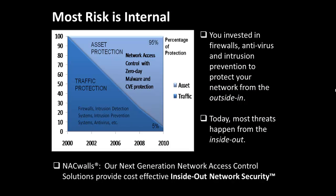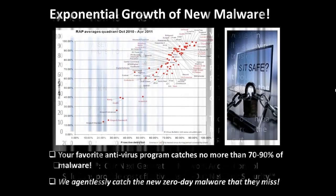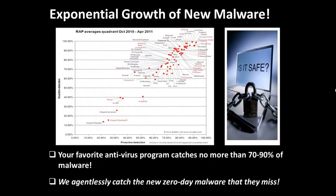Most risk is internal. While you've invested in firewalls, antivirus, and intrusion prevention and detection systems protecting networks from the outside in, today most threats happen from the inside out. There is an exponential growth of new malware, and your favorite antivirus program catches no more than 70–90% of malware.